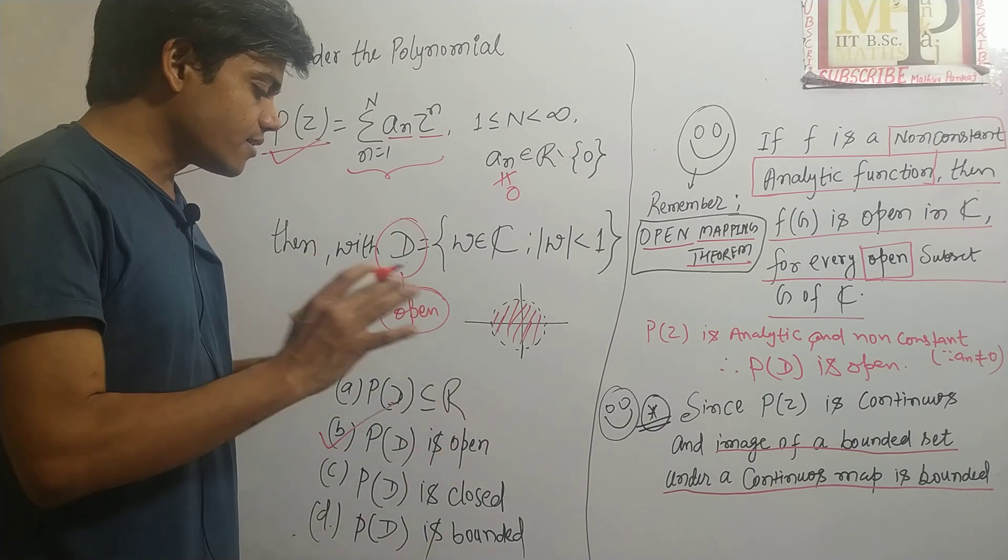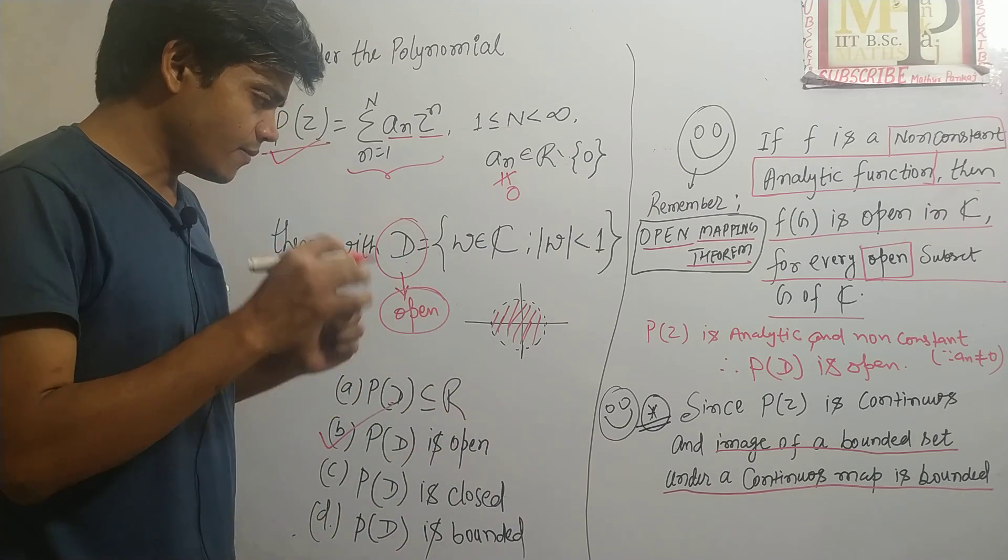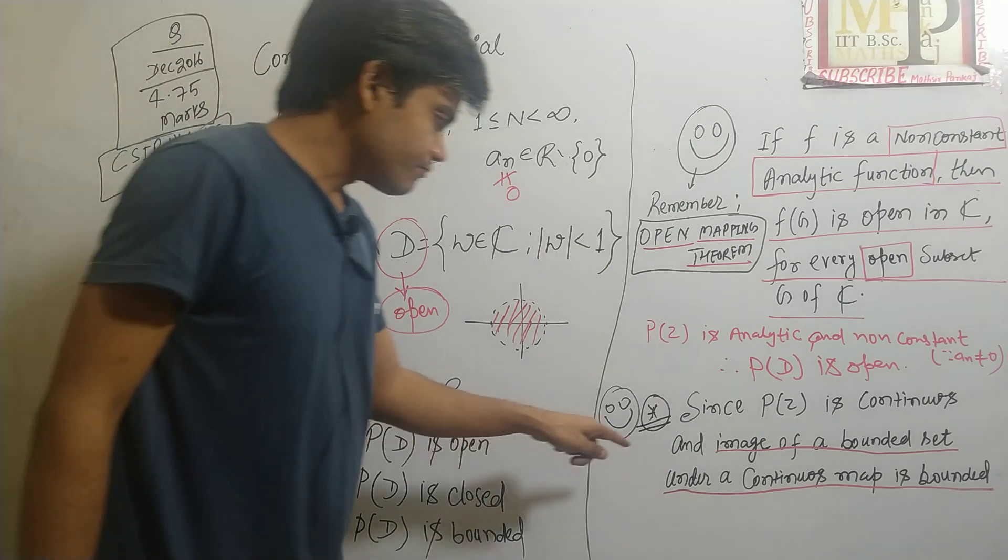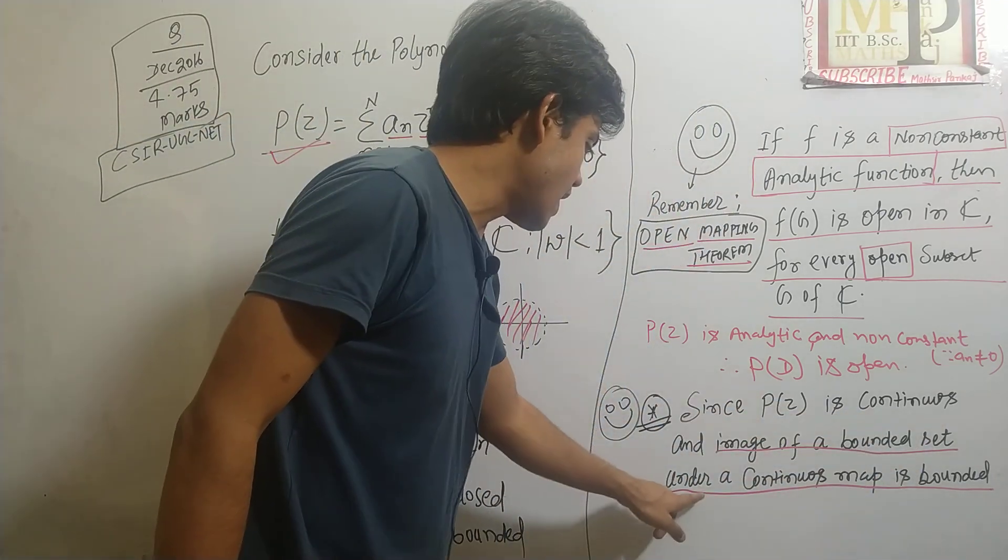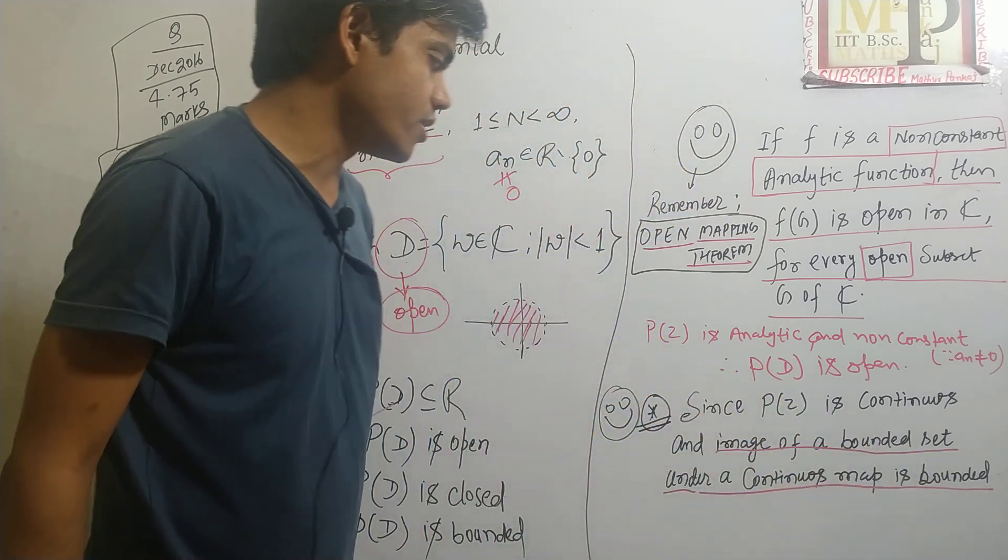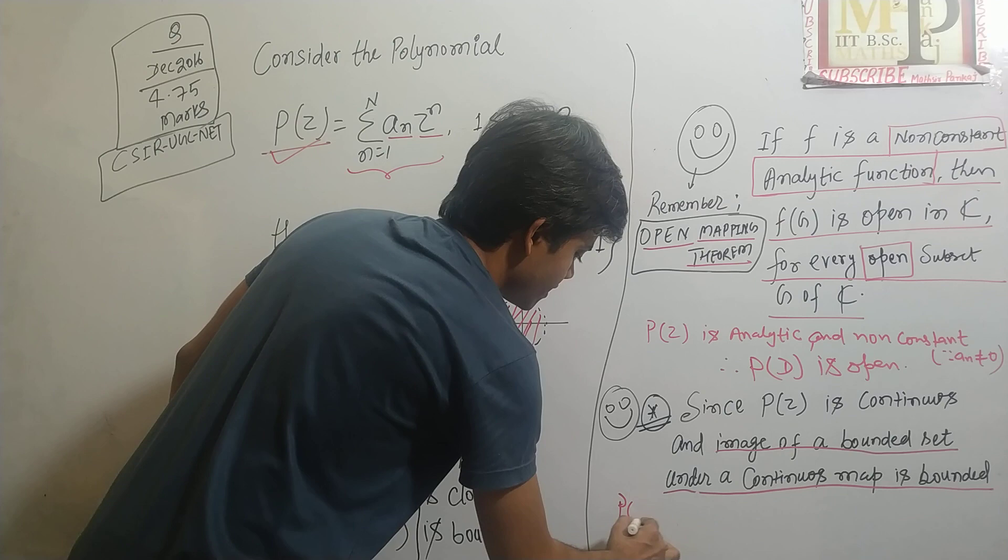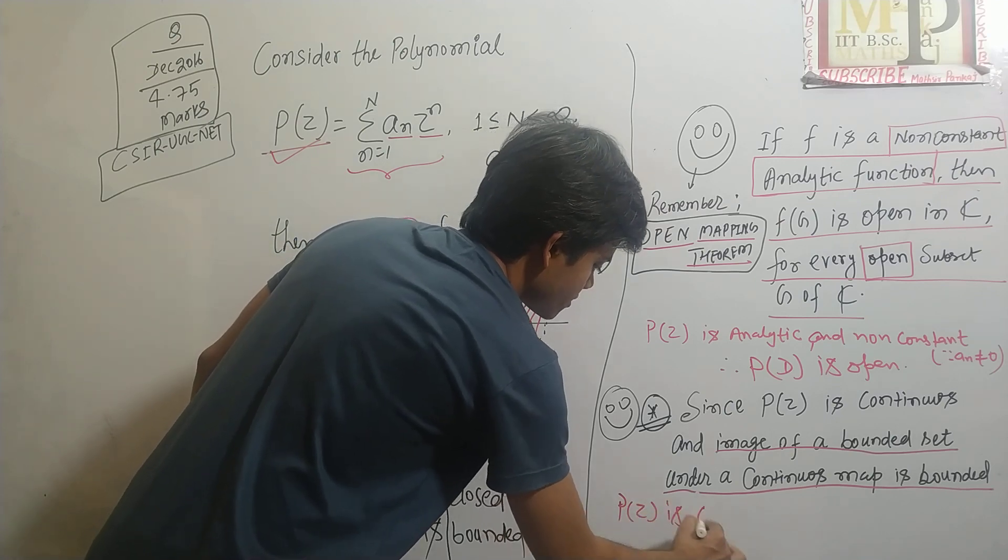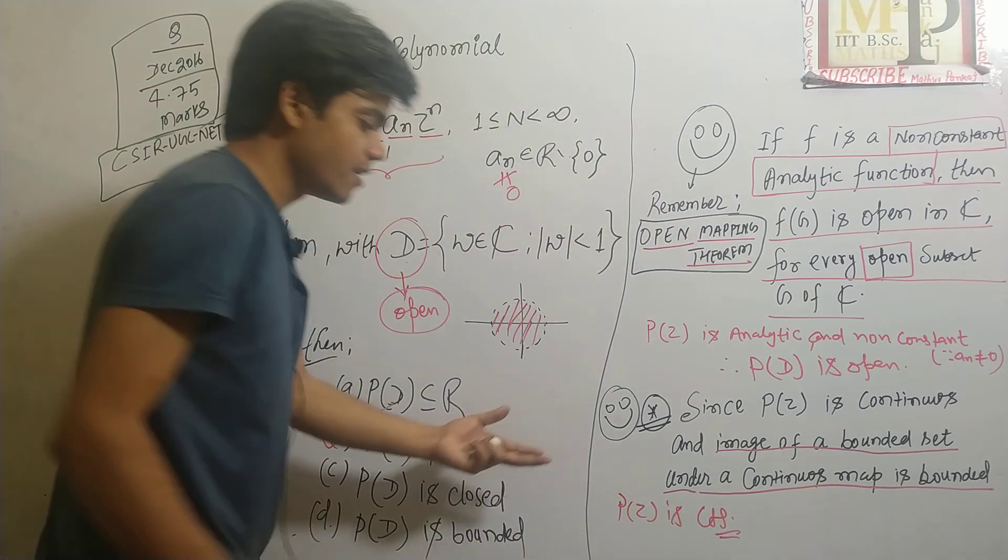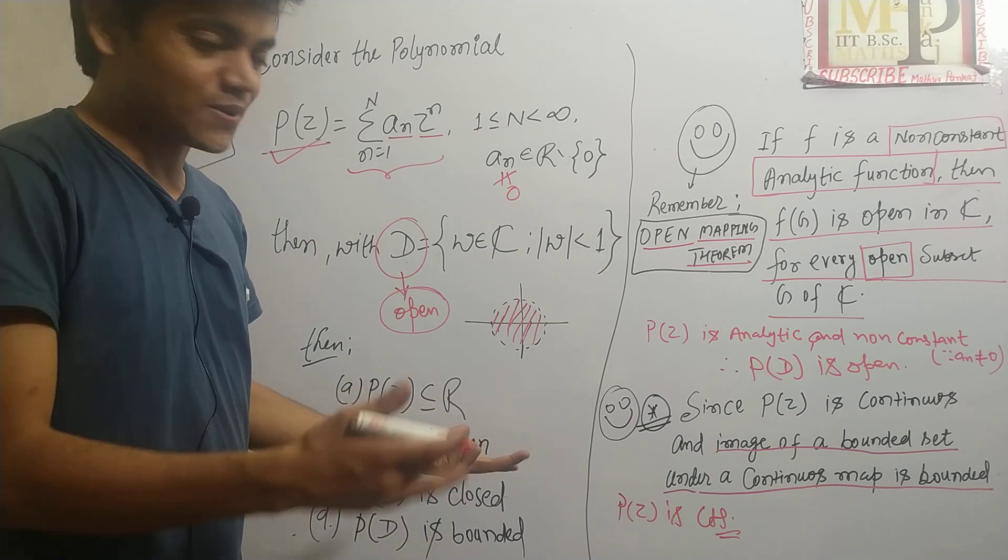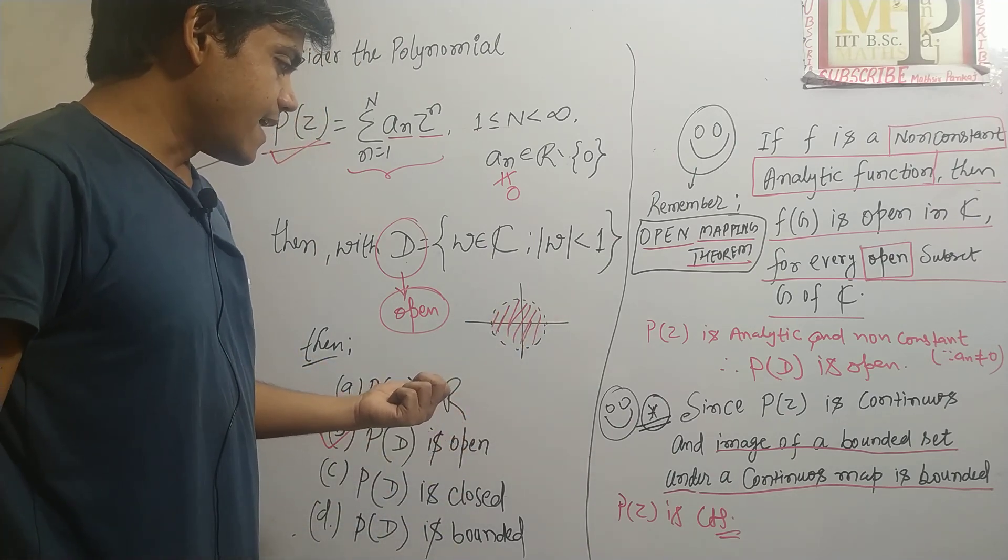Another result that should be remembered is: Image of a bounded set under a continuous map is bounded. So the first thing you can see, P of Z is continuous. Certainly P of Z is analytic, so certainly P of Z is continuous.